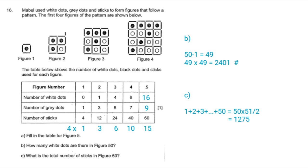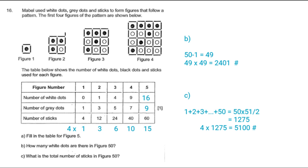4 times the triangular number gives us the number of sticks. So 4 times 1,275 is equal to 5,100. So for figure 50, there would be 5,100 sticks. That's the answer to these questions.